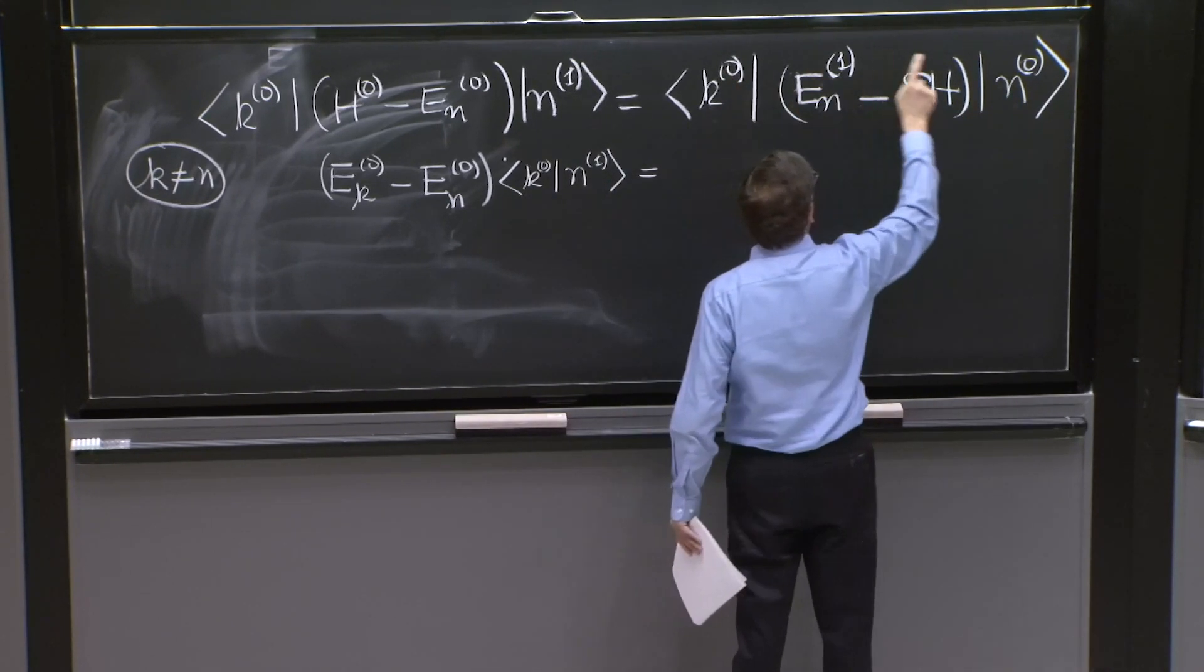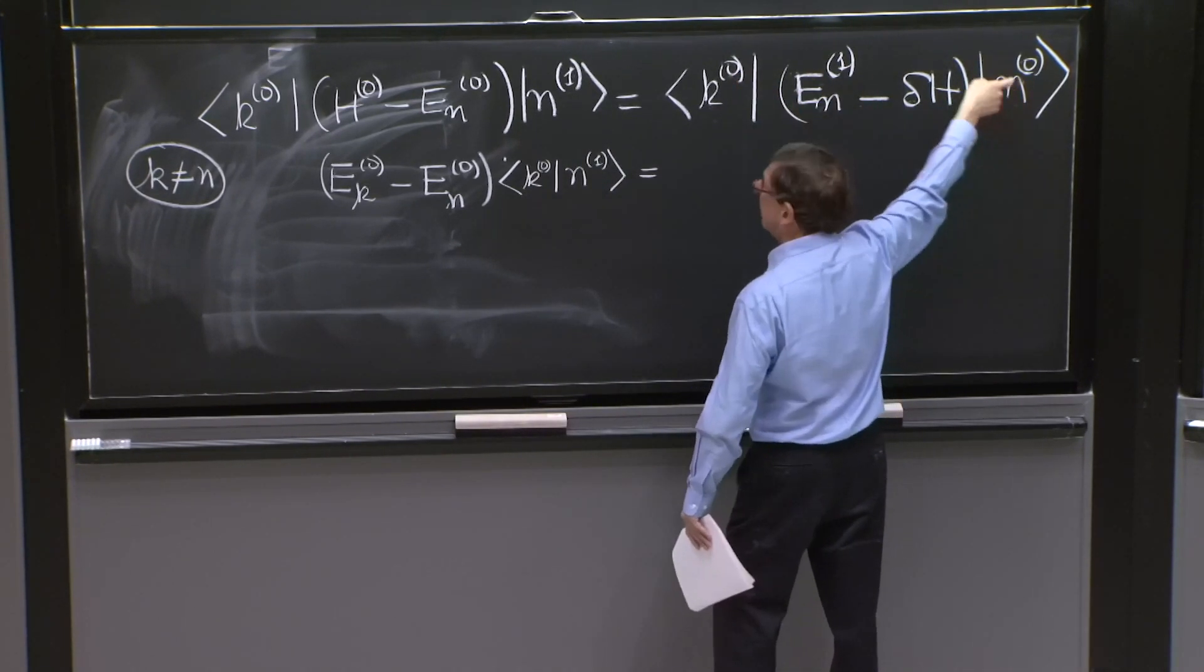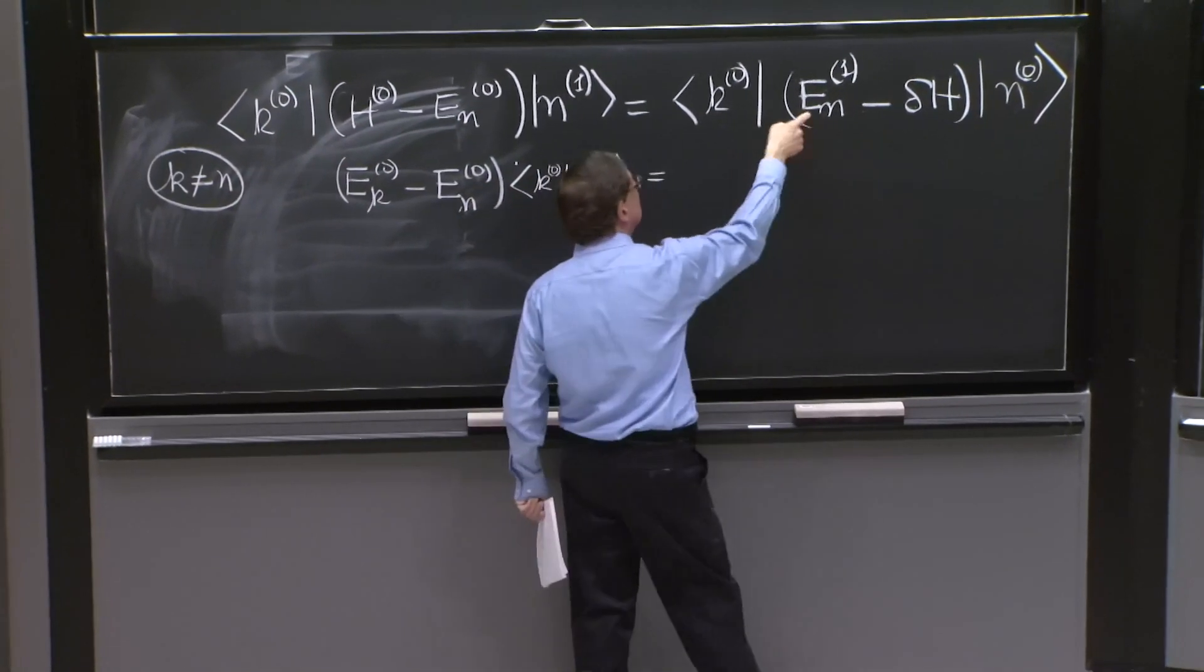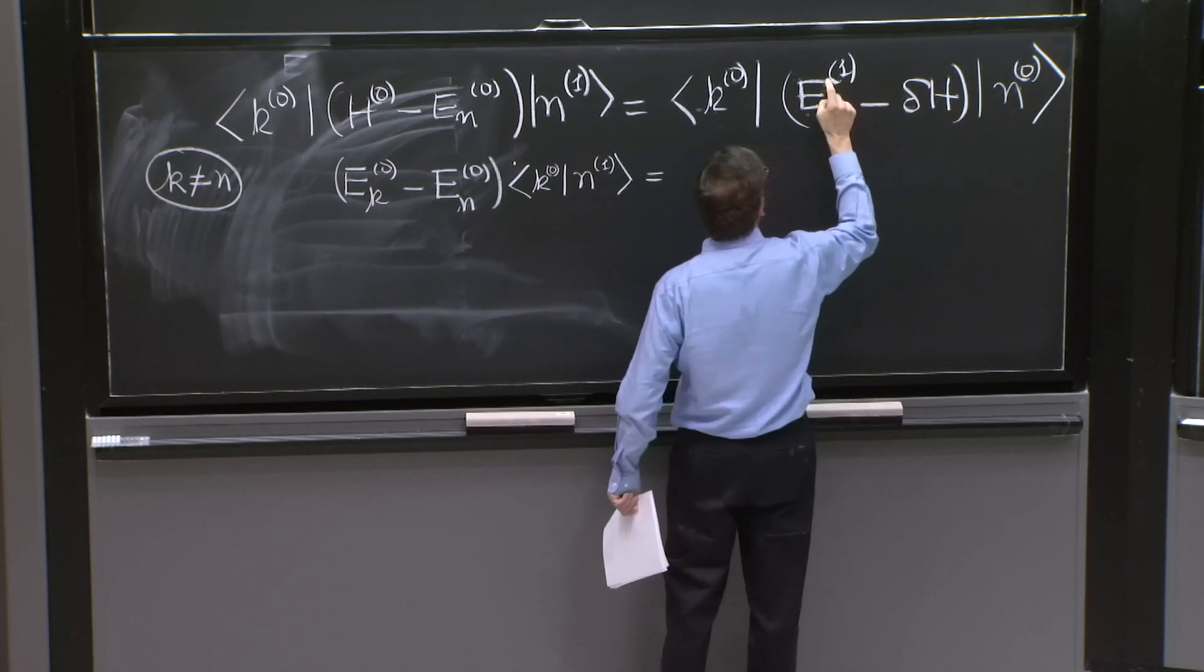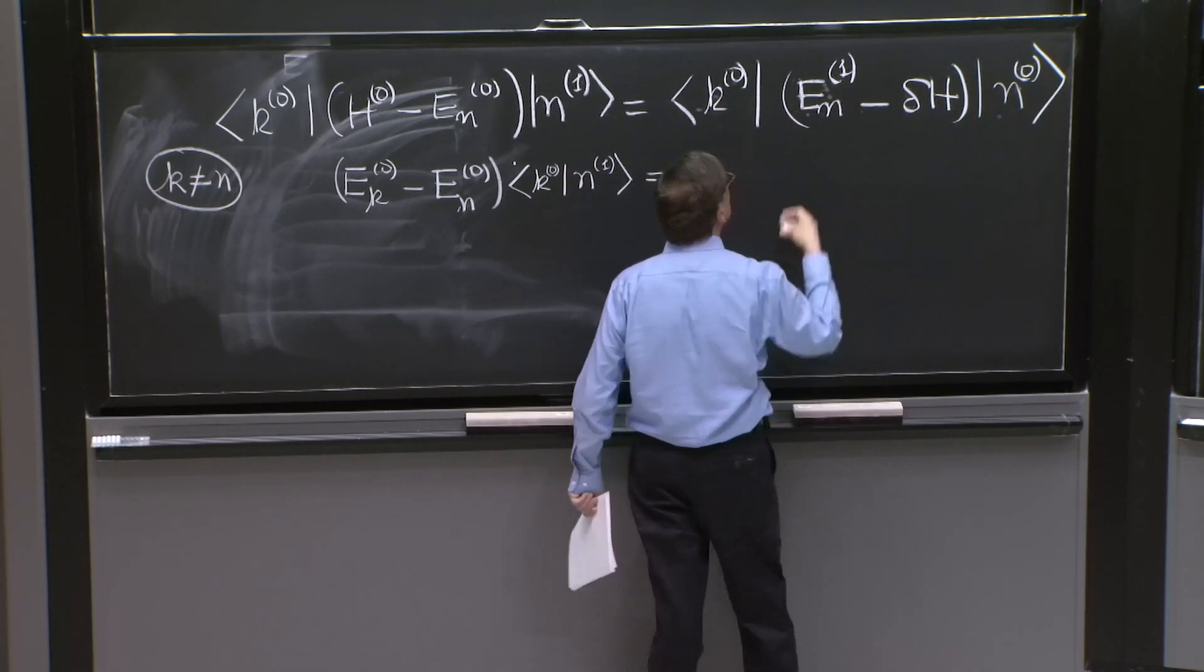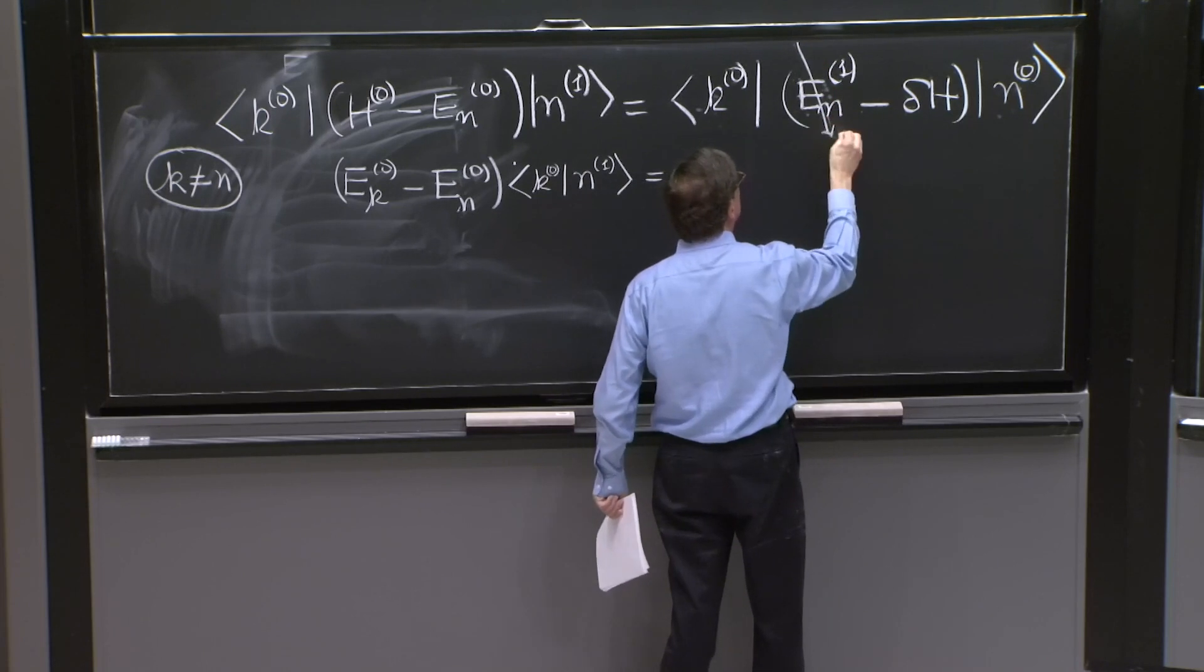Well, those are our original orthonormal states, and we said that k is different from n. And so this term is zero with the E_n1. This is a number, and these two states are orthogonal. So this term gives you a zero,